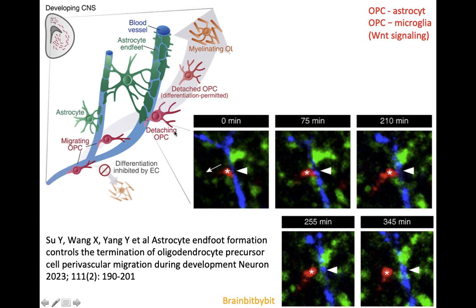There is also triggering of macroglial cells by OPCs, which also plays a role in the pathogenesis of MS. OPCs also influence Wnt signaling pathways in the extracellular space, which plays a role in multiple sclerosis.